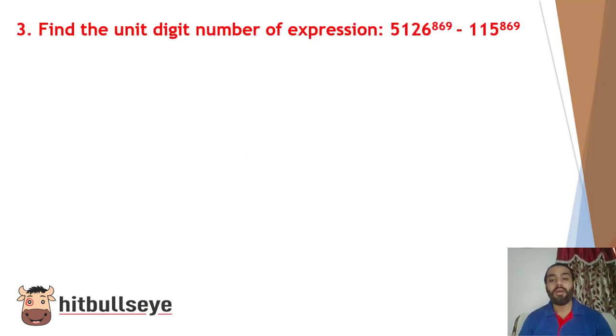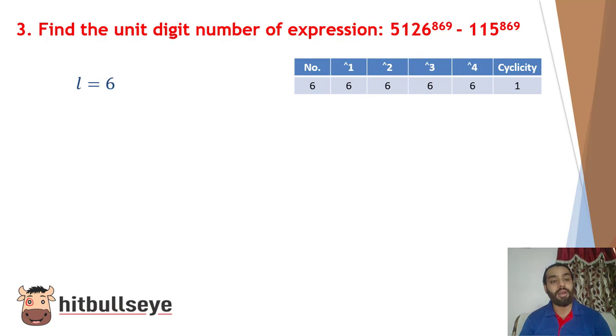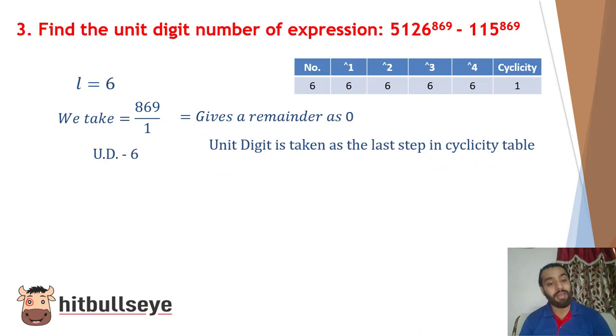Find the unit digit of number of expression: 5126 raised to the power 869 minus 115 raised to the power 869. Now an expression has been given to you, you have to find the unit digit. You can solve both parts separately. So for example, for the first expression the unit digit is 6. Now we know that if it's 6, the unit digit will always be 6 only. So whether you do full calculations or write directly, at the end you will get 6. In the previous slide where we explained the concept, we told you that the cyclicity of 6 will always be 6. Similarly, in the next part, where 115 is written, we have to take the unit digit as 5. You can solve it completely, but you can directly write that the unit digit is 5 only. Now, solving this: 6 minus 5, and you will get your unit digit as 1.